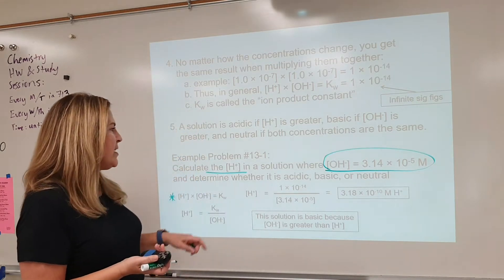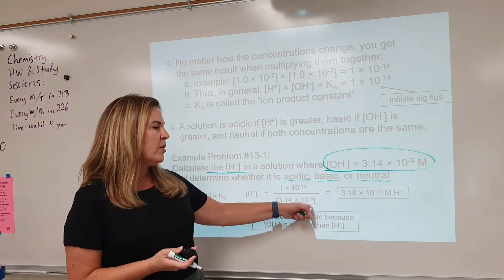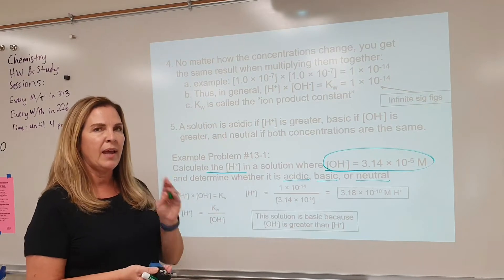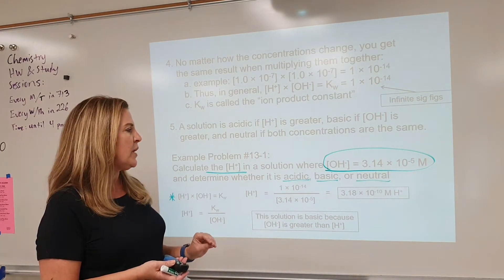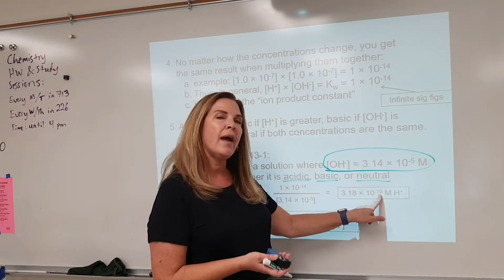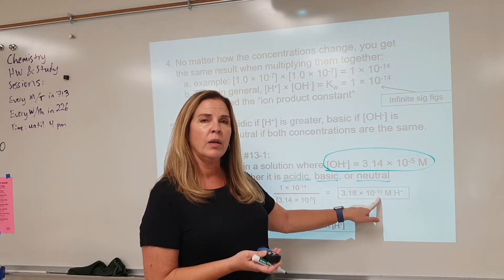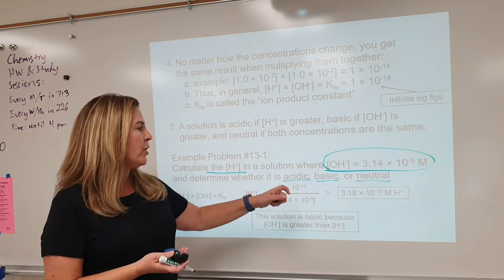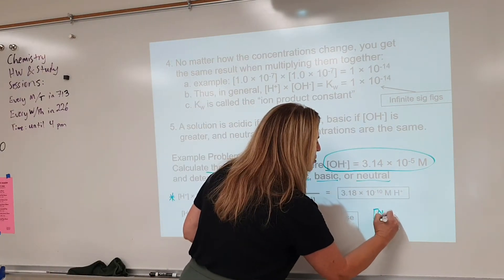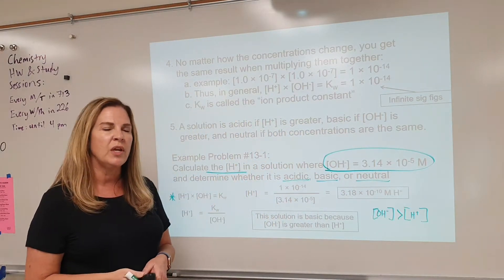The last part of this question is: is this acidic, basic, or neutral? We compare the hydroxide information and the hydrogen ion information to make a determination. This is sometimes challenging for students — we see times 10 to the minus 5 and times 10 to the minus 10. Students often say this is bigger, but remember that negative sign means this is very, very small. Times 10 to the minus 10 is much smaller than times 10 to the minus 5, so the hydroxide ion concentration is greater than the hydrogen ion concentration, which means this solution is basic.